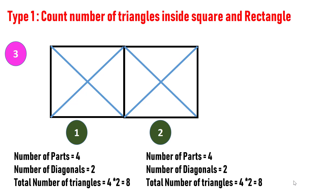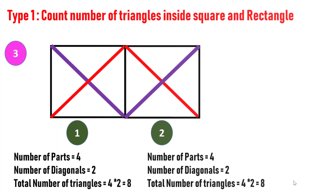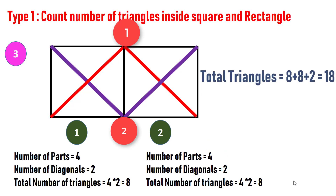In this figure, there are two squares and each square has two diagonals and four blocks. Hence, total number of triangles in each square is four into two, which is eight. Also, containing two squares will yield additional two triangles as shown here. Hence, total number of triangles is eight plus eight plus two, which is 18.